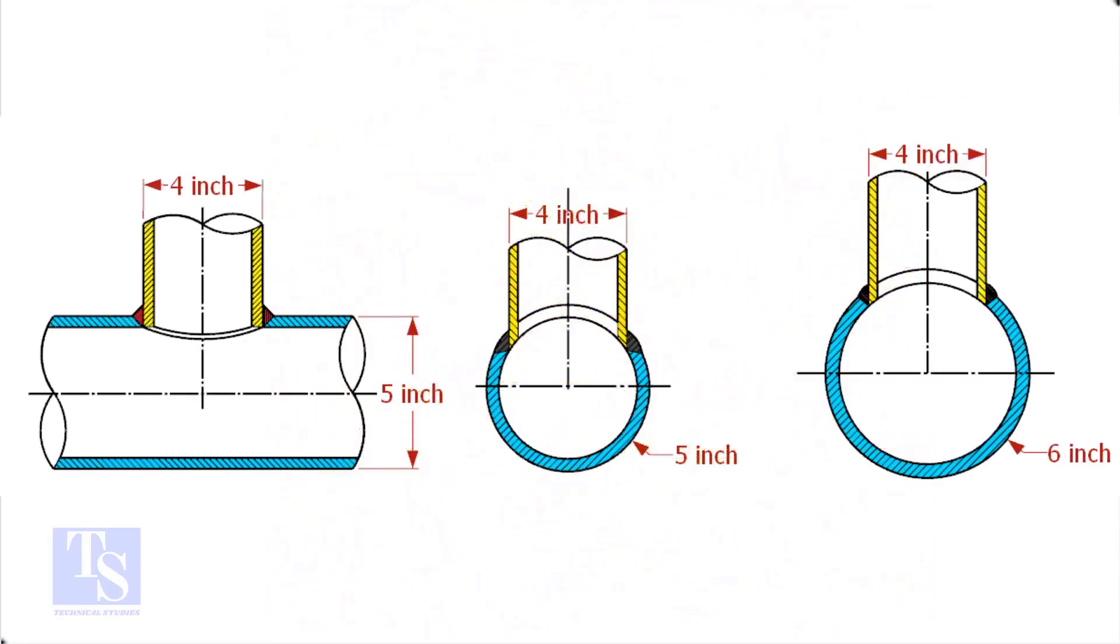In the case of stub-in connections, the branch pipe size is one or more units less than the header size. Suppose both the header and the branch size are the same, a stub-in connection is not possible. Watch the section side view carefully.